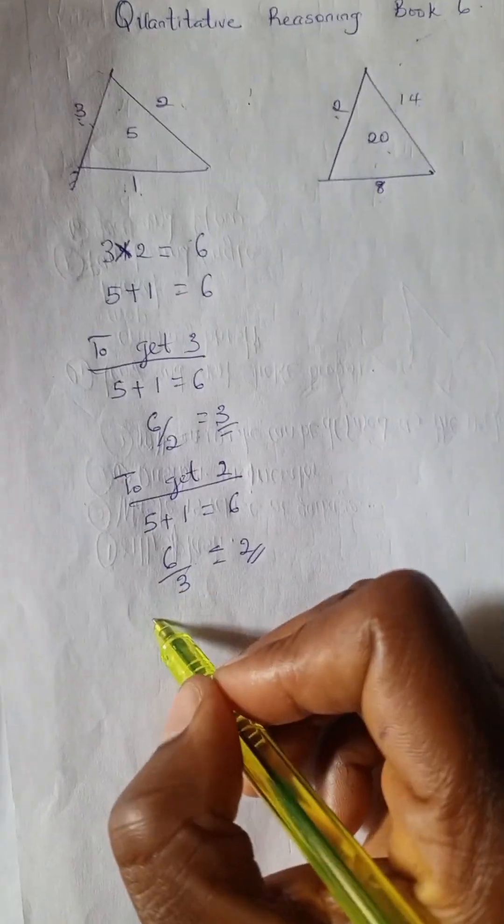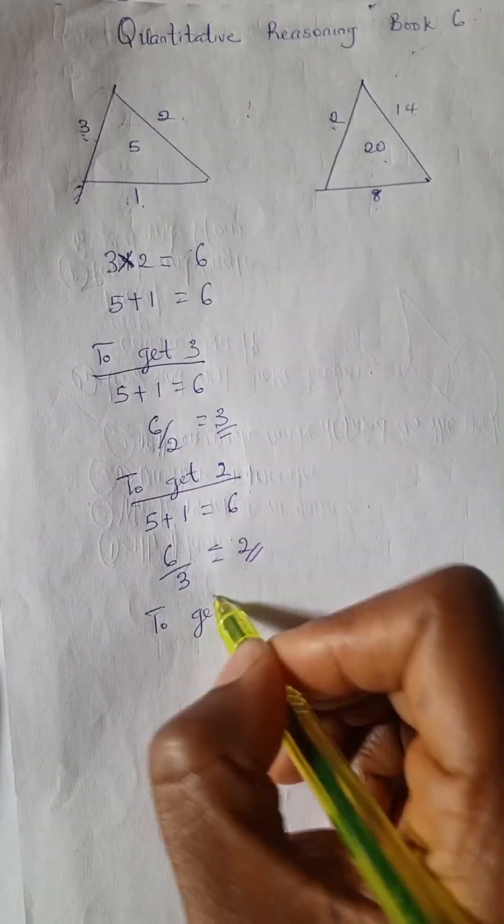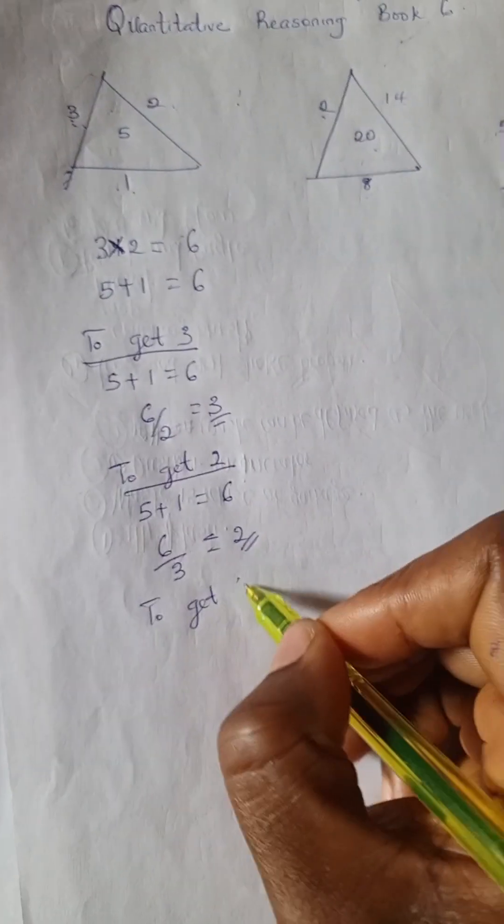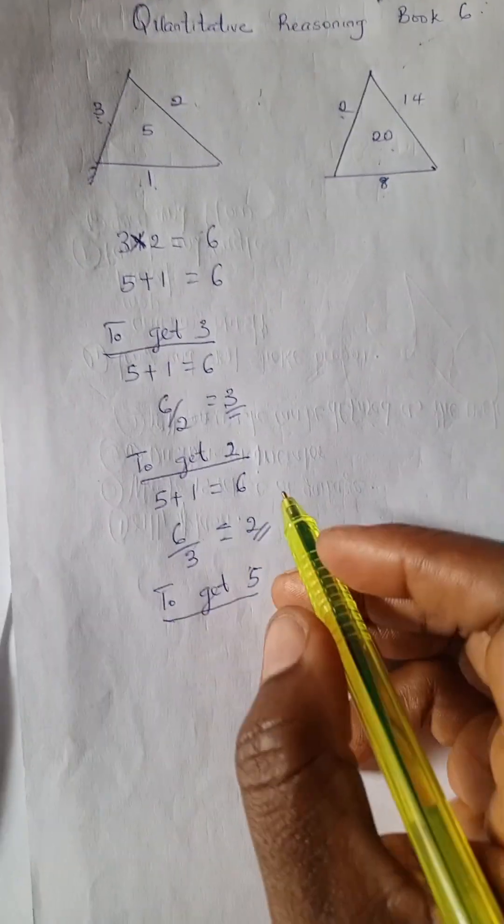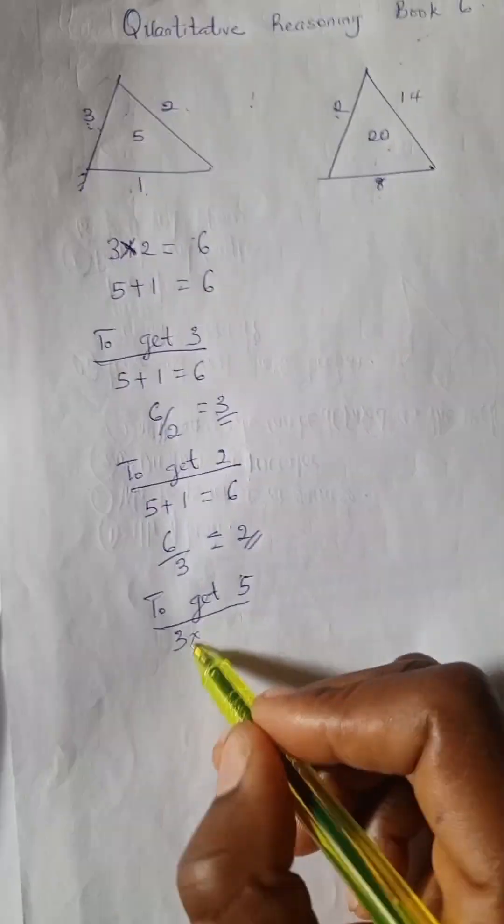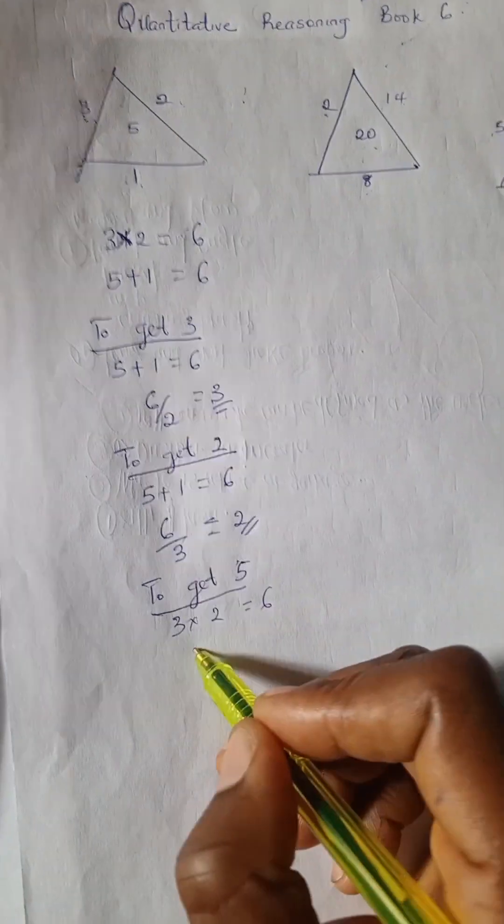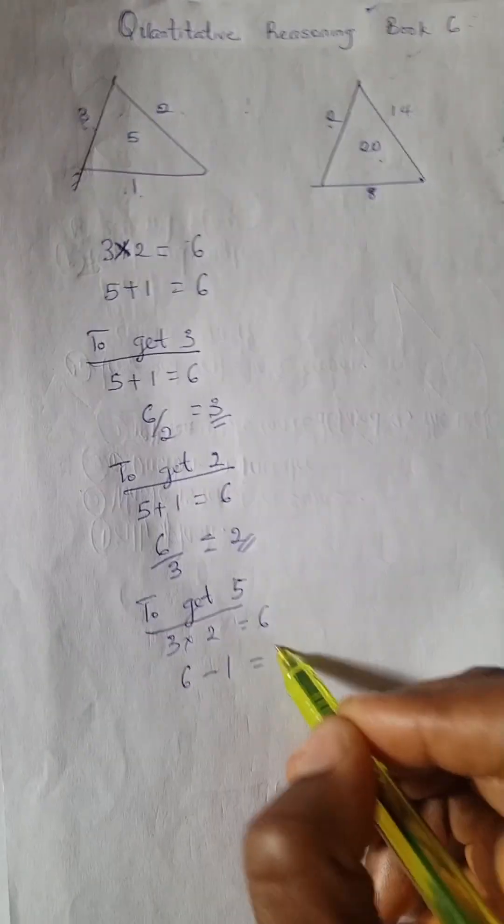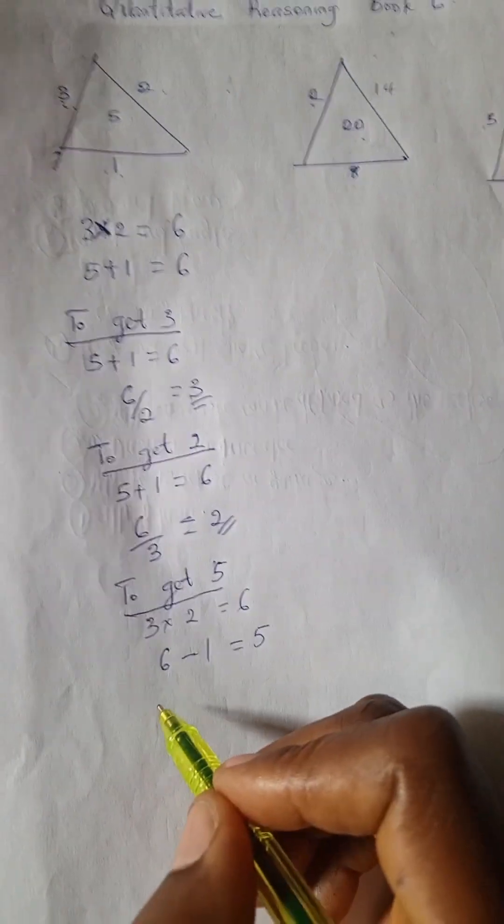Let's try to get 5. To get 5, I'm going to use 3 times 2 is 6, and 6 minus 1 is 5.